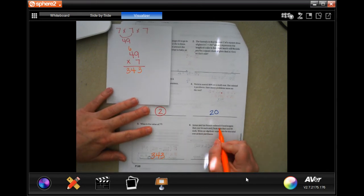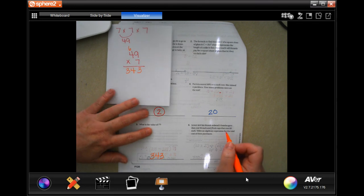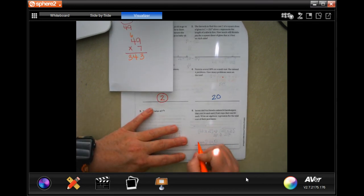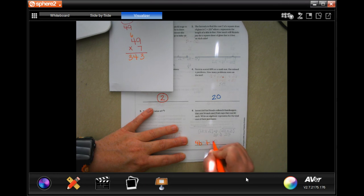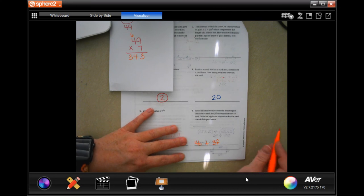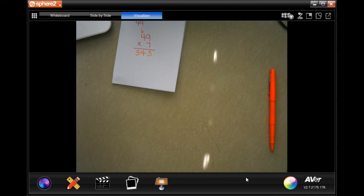James and his friends ordered B hamburgers that cost $4 each and F fruit cups that cost $3 each. Write an algebraic expression for the total cost of their purchases. Well, their purchases would be $4 for each burger plus $3 for each fruit cup. Done. All right, guys. Thanks for hanging out for 7.5. Come on back for 7.6. See you soon.